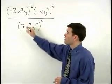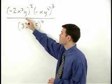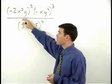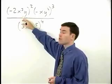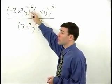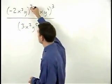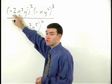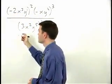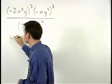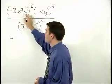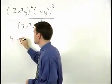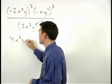First, we apply the power rule for each set of parentheses in the numerator. To simplify negative 2x to the third y squared, think of y as y to the first and square the coefficient of negative 2 to get positive 4, and multiply each of our exponents by 2 to get x to the sixth y squared.